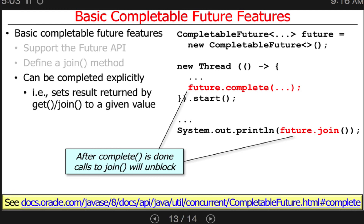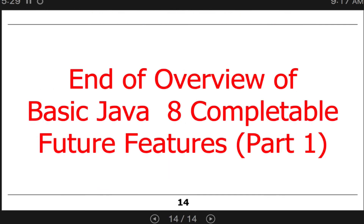There's another method very similar to complete called completedValue, where you can give a value to a future when you create it. Unlike the approach where we make a future and then complete it as a separate step, you can also just say completedValue and give it a value — that'll make a future and complete it in one step. It turns out that's something you'll need to use for your assignment. So that's the end of the basic simple stuff.